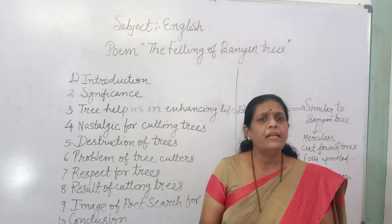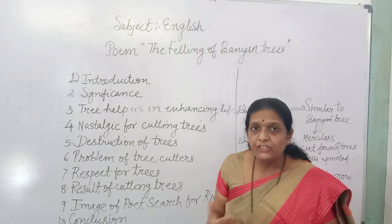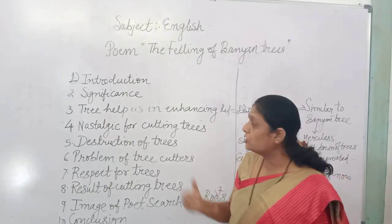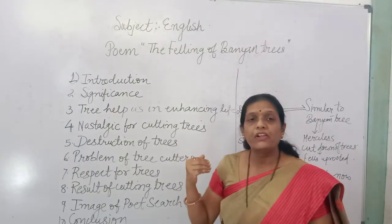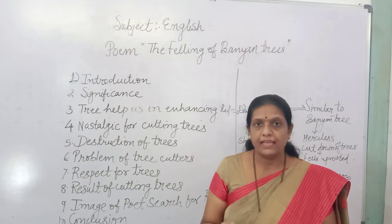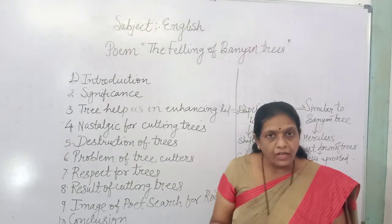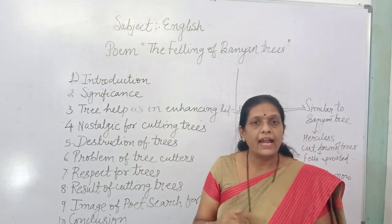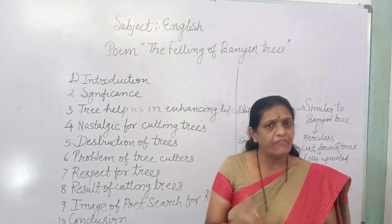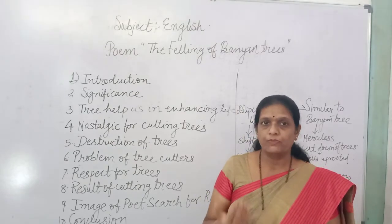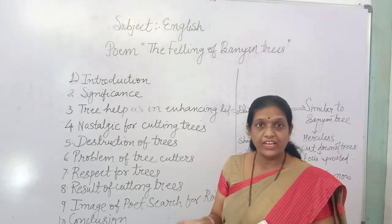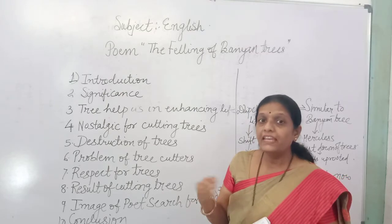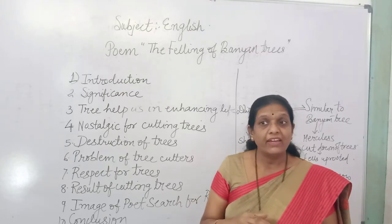Despite the mother's objections, Dilip Chitre's father decided to cut down the trees. The tenants who were residing in the house were ordered to vacate so that the trees could be cut. There were three trees to be cut — Odumbar, Shoka, and Neem — and they were cut down.